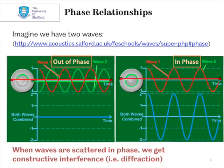On the right-hand side, we have two waves that are in-phase, so the peaks and troughs are coincident. And when we combine these, we get a wave with a bigger amplitude. So the two waves have constructively interfered. And this is the process that underpins diffraction.